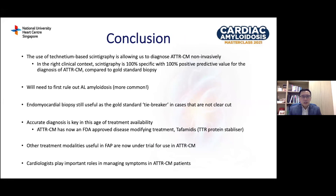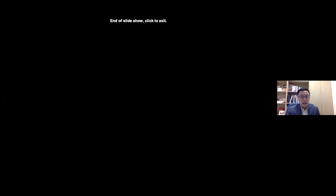In conclusion, the use of technetium-based scintigraphy has allowed us to diagnose ATTR-CM non-invasively, which is more palatable to elderly patients. We must always first rule out AL amyloidosis, which is the most common form affecting the heart. Myocardial biopsy is still the gold standard and can be used as a tiebreaker in patients with conflicting light chain and scintigraphy results. Accurate diagnosis is important because there is now specific treatment for ATTR-CM. Other modalities useful in familial amyloid polyneuropathy are now under trial, and cardiologists play a very important role in managing symptoms regardless of whether patients are on disease-modifying treatments or not. Thank you for your attention.